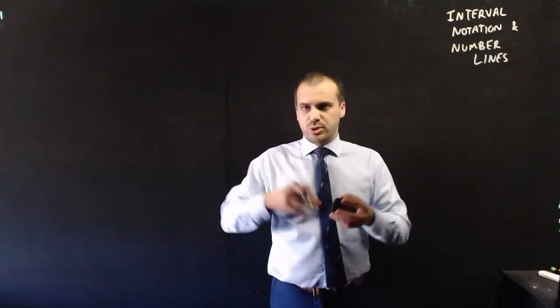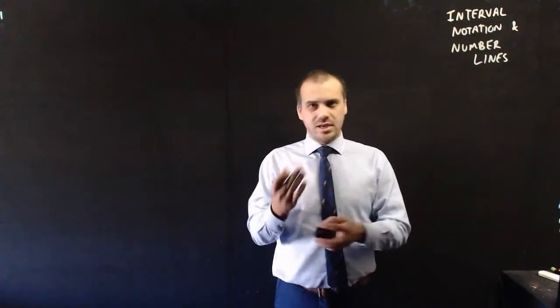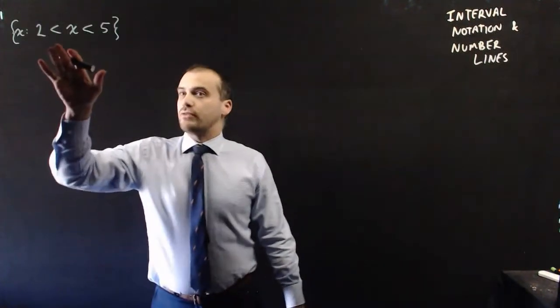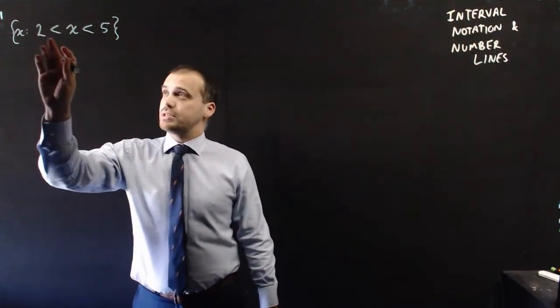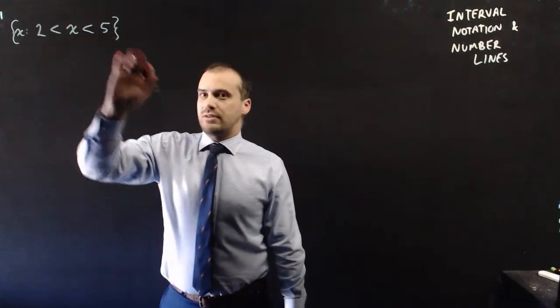So if you want to say that a number, x, is between two other numbers, there's a couple of different ways to write that, and you need to be familiar with both of those. This says that x is in the set of numbers between 2 and 5, but not including 2 and 5, because this says that 2 is less than x and x is less than 5.